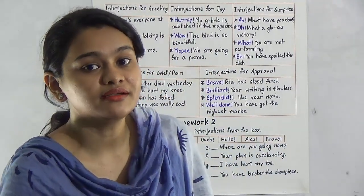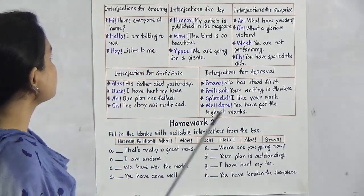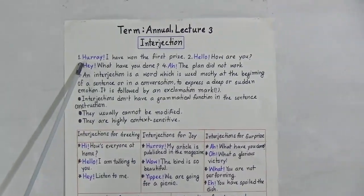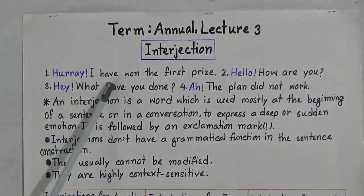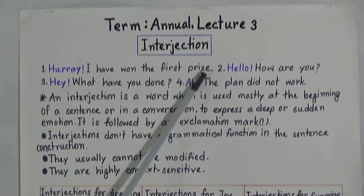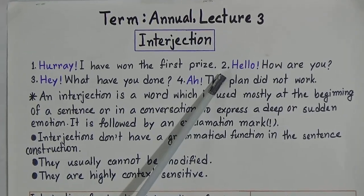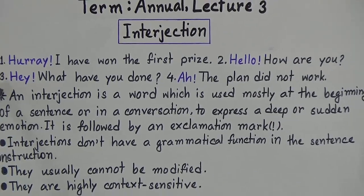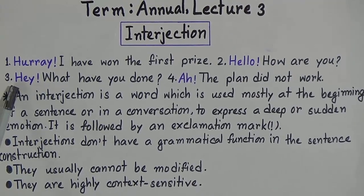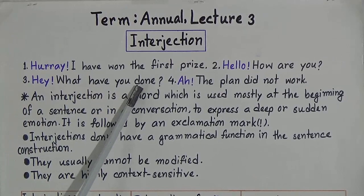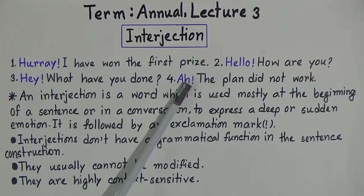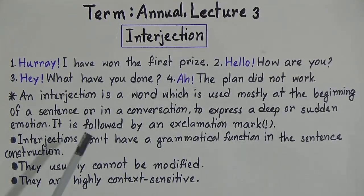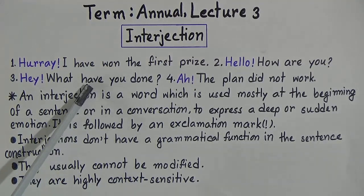At first we will read these sentences. Number one: Hooray! I have won the first prize. Number two: Hello! How are you? Number three: Hey! What have you done? Number four: Ah! The plan did not work. Now look at these sentences.